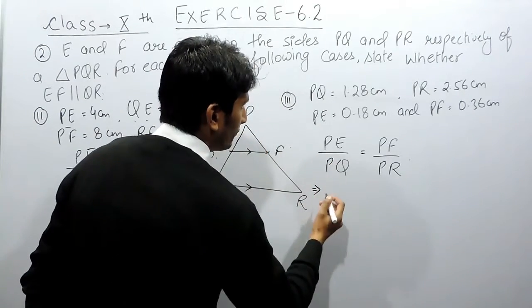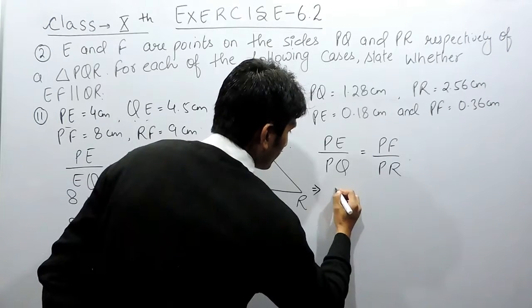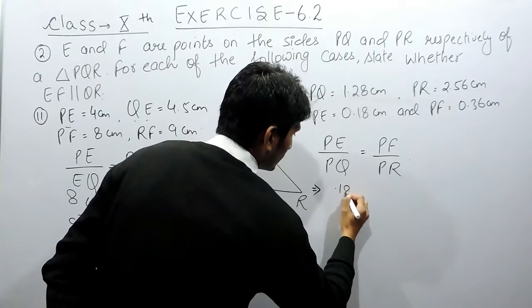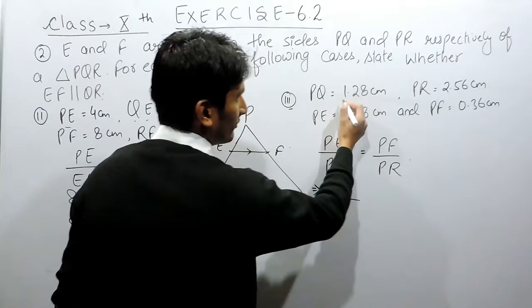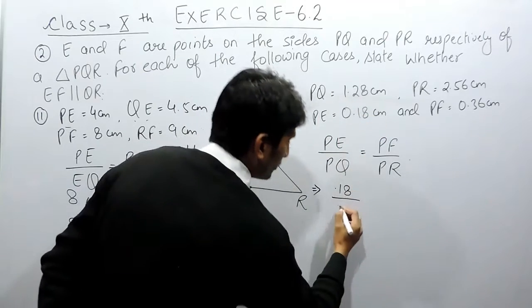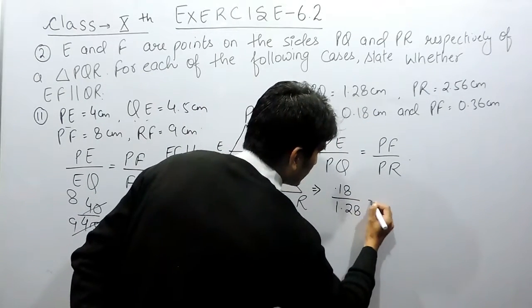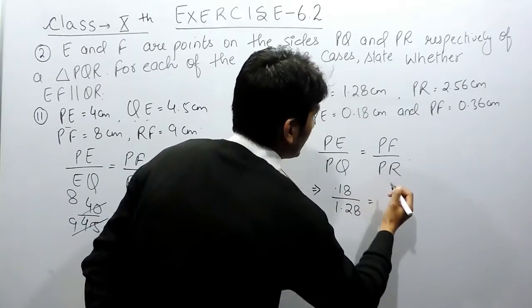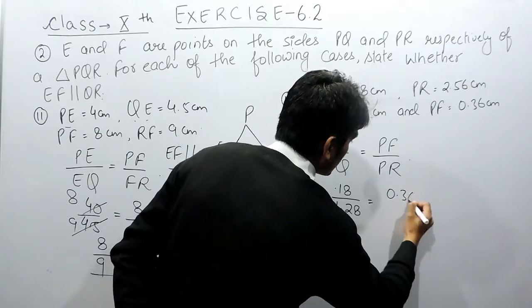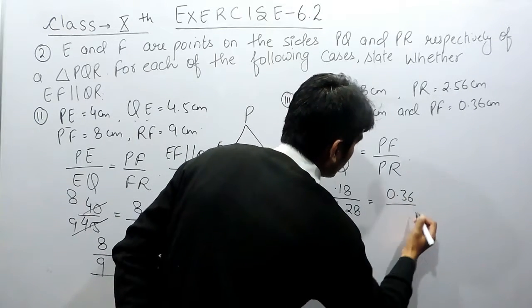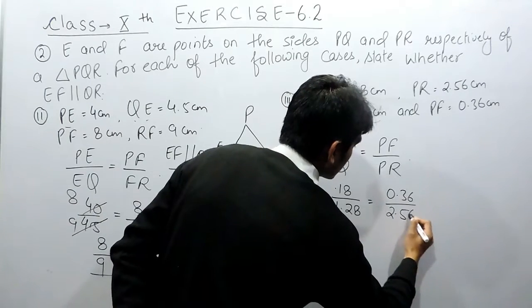The value of PE is given as 0.18, the value of PQ is given as 1.28. This is equal to PF upon PR, where PF is 0.36 and PR is 2.56.